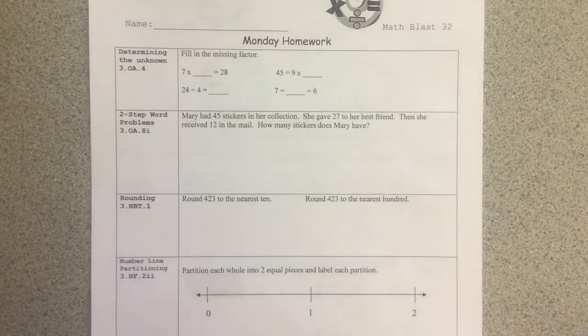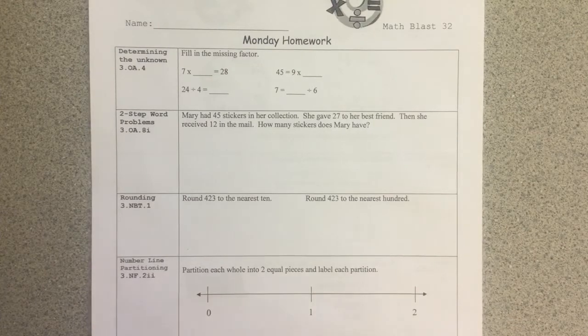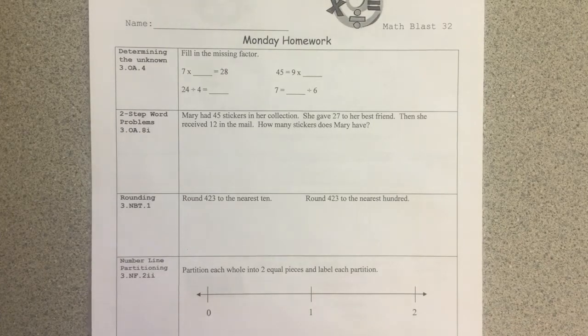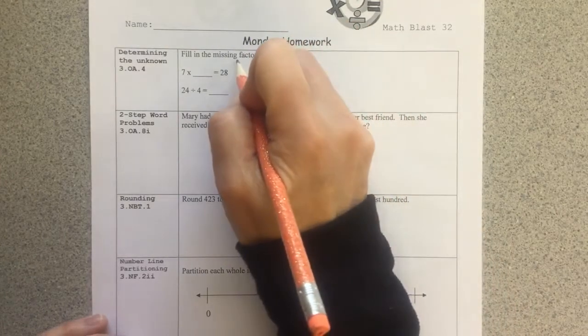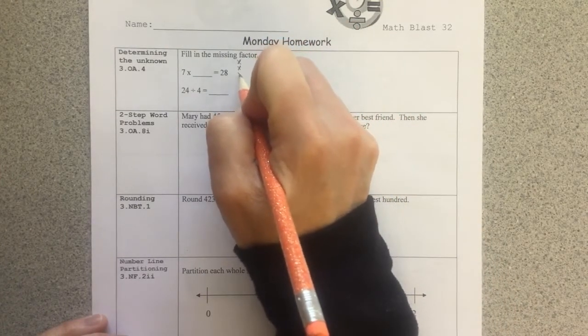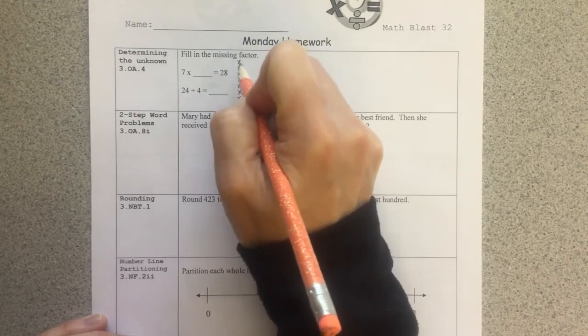Math Class 32. Determining the unknown. 7 times what is equal to 28? That says 7 groups of what equals 28. With that in mind, I'm going to draw an array. I'm going to put 7 rows. Those are my groups.